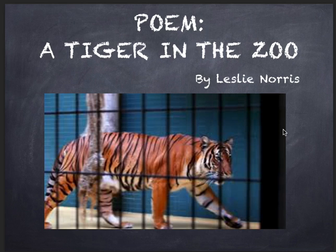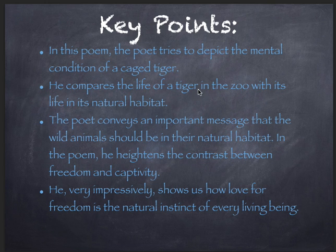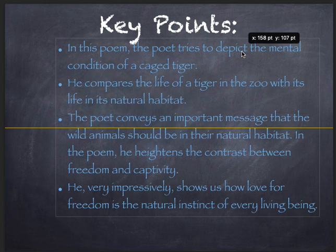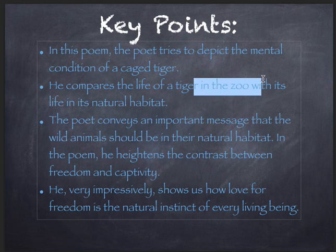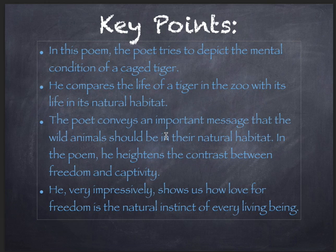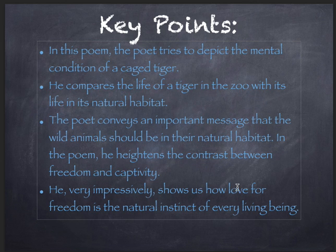Today, I will be explaining the poem 'A Tiger in the Zoo', written by Leslie Norris. First of all, we will come to know the key points of this poem and what exactly is the theme. In this poem, the poet tries to depict the mental condition of a caged tiger. He compares the life of a tiger in the zoo with its life in its natural habitat. The poet conveys an important message that wild animals should be in their natural habitat, and he heightens the contrast between freedom and captivity — how an animal feels when free and how it feels when in captivity. The poet very impressively shows us how love for freedom is the natural instinct of every living being.